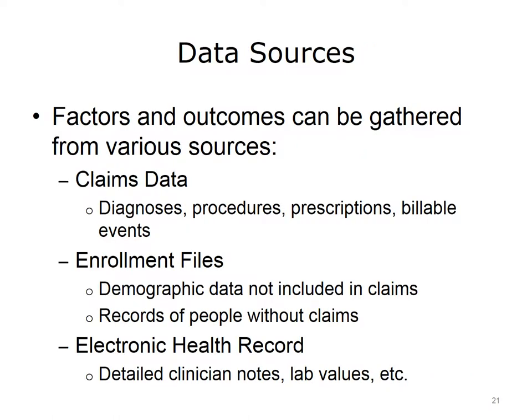Factors and outcomes for estimating or predicting models can be gathered from many sources. Claims data are the records between providers and payers of services performed, and typically include the diagnosis and basic demographic information, such as age and sex. Enrollment data can provide additional demographic information not included in the claim record, and will include factors for individuals who have not had claims submitted on their behalf. Finally, many organizations have electronic health records which can include detailed clinician notes, lab values, and other measurements not included in claims or enrollment data.